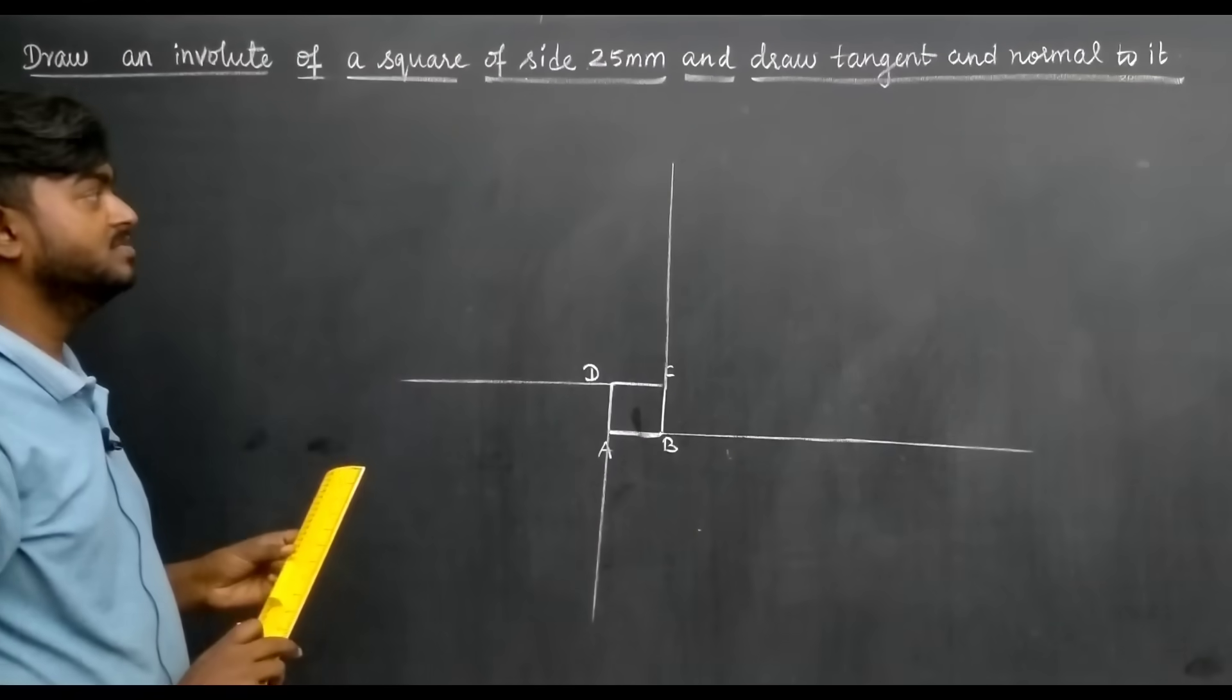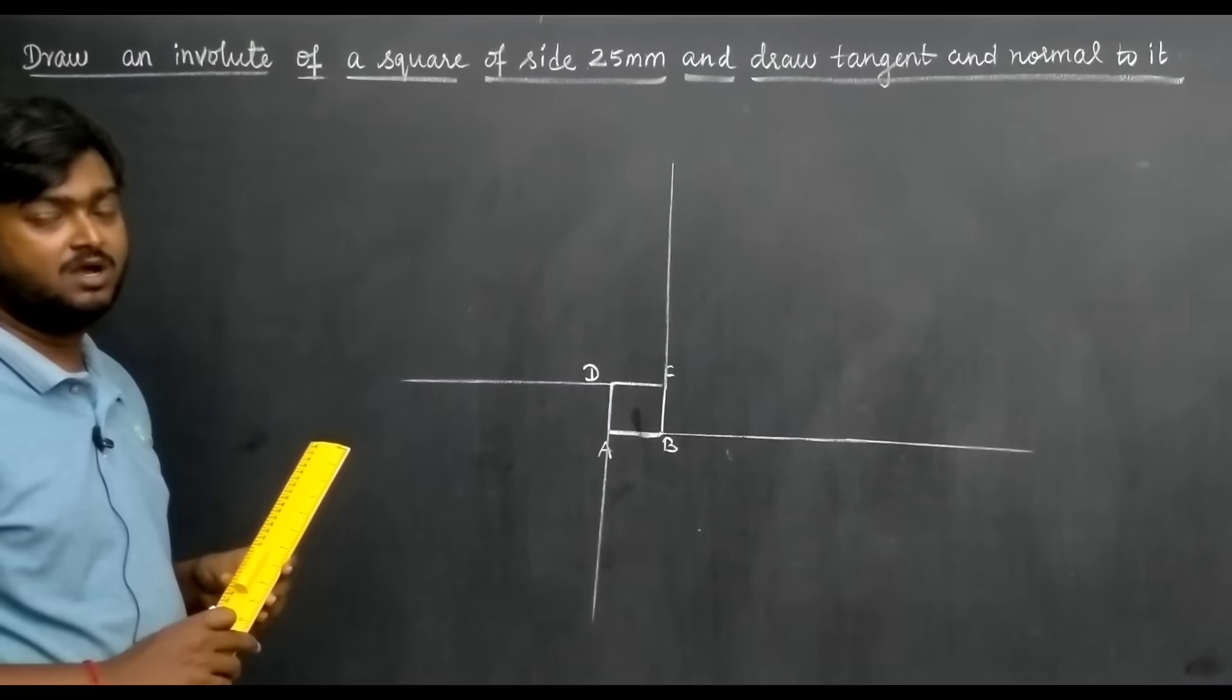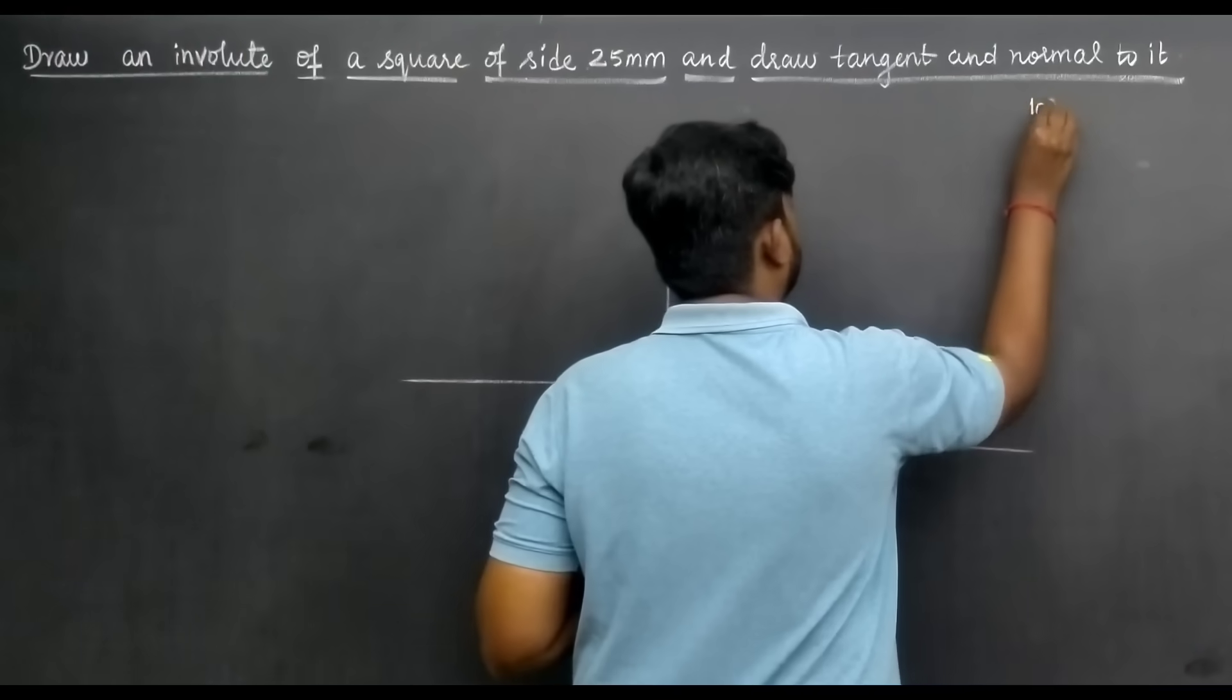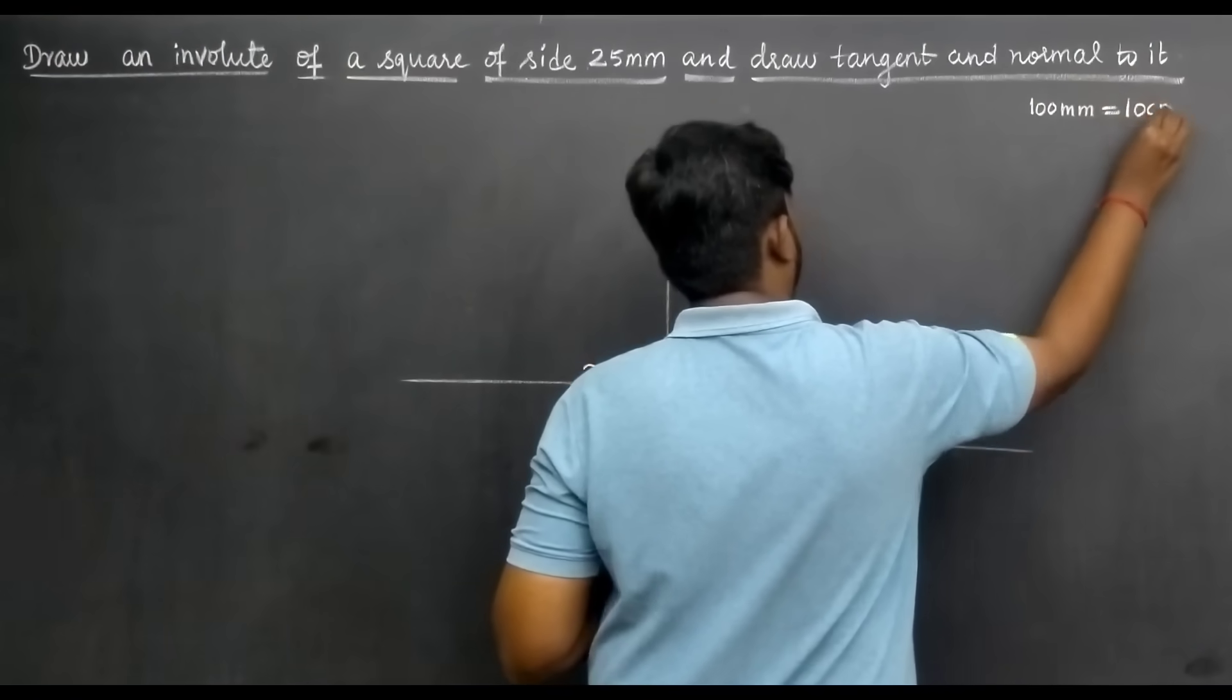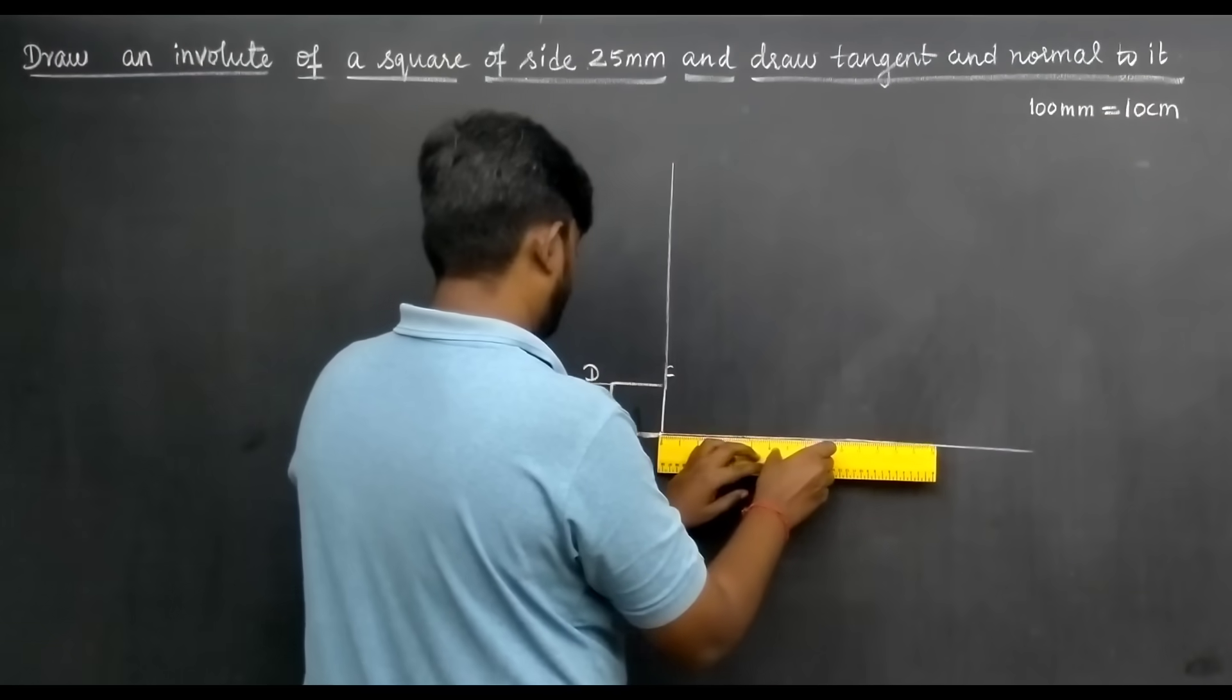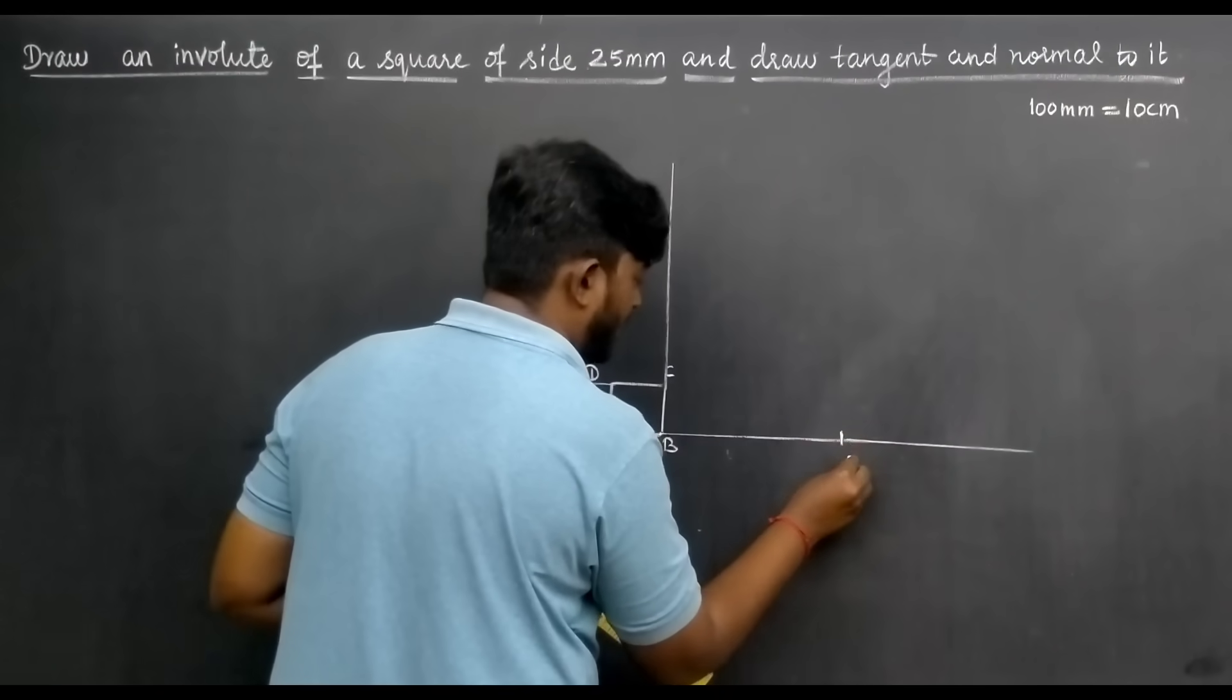Now we need to check the total distance. One side is 25mm, so four sides will be 100mm. And 100mm equals how many centimeters? 100mm equals 10 centimeter. So the B point length will have dots. This point is P.